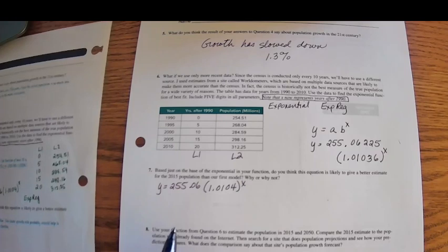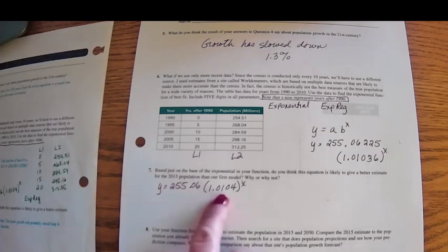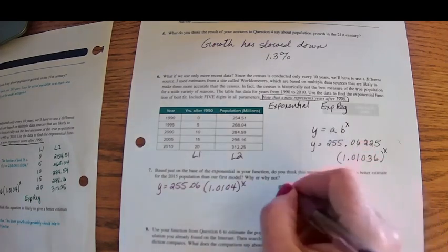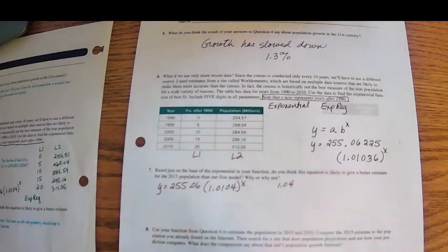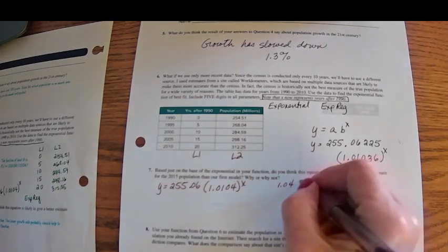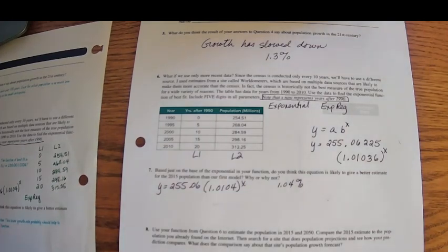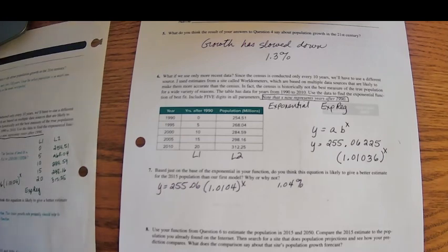So based just on the base of the exponential in your function, what do you think is going to give us a better estimate for 2015? Probably this, because this has a lower growth rate. This had a growth rate of 1.04%, 1.04% growth rate as opposed to 1.3. So the lower growth rate is probably going to be a better model.